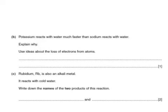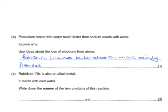Potassium reacts with water much faster than sodium reacts with water. Explain why, using ideas about the loss of electrons from atoms. Potassium loses its outer electron more easily than sodium as it is further from the nucleus.